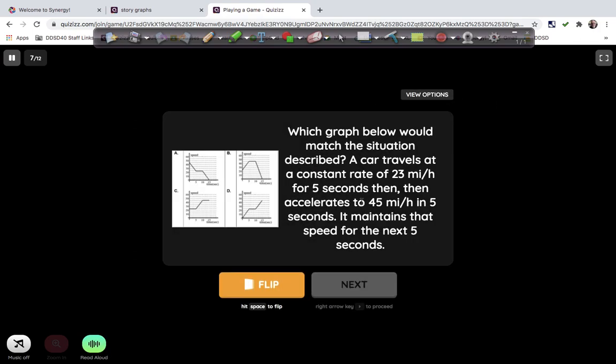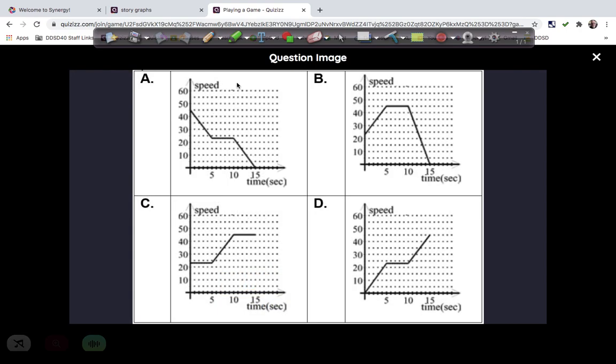Which graph below would match the situation described? So a car travels at a constant rate of 23 miles per hour for five seconds, and then accelerates up to 45 miles per hour in five seconds, and maintains that speed for the next five seconds. So we've got these three segments of constant rate, and then accelerates up to 45 for five seconds, and maintains that. Okay, so it's going to start at 23 miles an hour for five seconds. So let's look and see which ones we can eliminate.